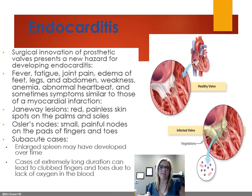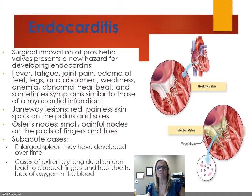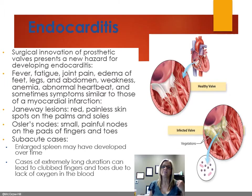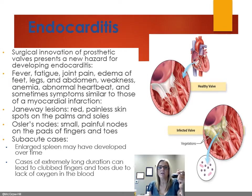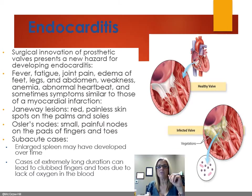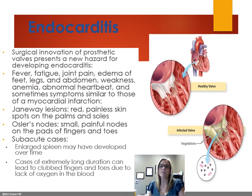Symptoms include fever, fatigue, joint pain, edema in the feet, abdomen, or legs, weakness, anemia, and abnormal heartbeat. Sometimes symptoms resemble a myocardial infarction. You can have abdominal or side pain, and the patient generally looks very ill. You'll see petechiae — ruptured capillaries — over the upper half of the body and under the fingernails. There can be Janeway lesions, which are painless reddened skin spots on the palms and soles. Osler's nodes are painful nodules on the finger and toe pads. Subacute cases may show enlarged spleen, and long-term cases can lead to clubbed fingers and toes due to lack of oxygen.